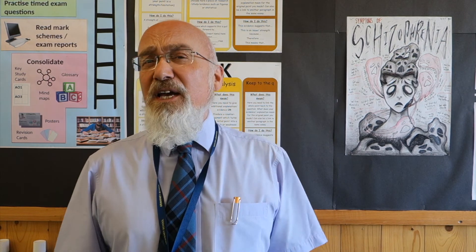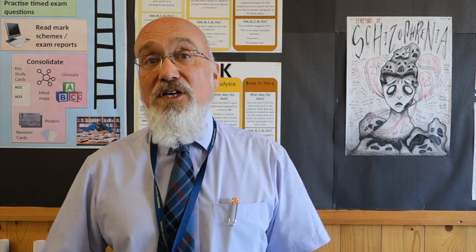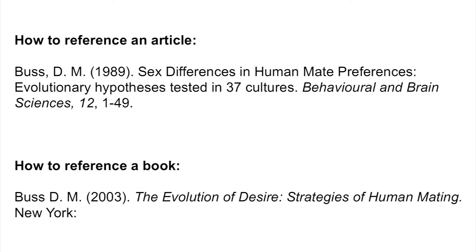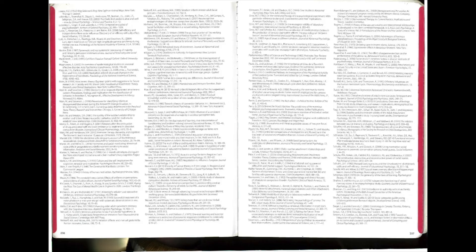For an entire book, the format is: author name or names (surname followed by initials), date of publication, title of the book, place of publication, and the name of the publisher. Some examples of references from a textbook are shown here, and you can see they follow this convention.